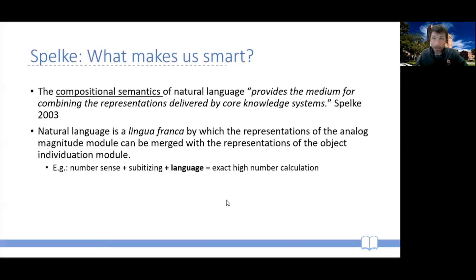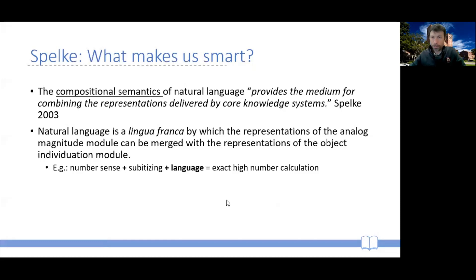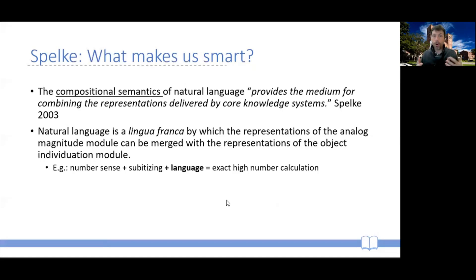This is what allows us, and not other species, to develop the number 745 — an exact high number — which is not delivered by either module by itself, but can be created by combining the representations of the number sense and the subitizing module. According to the theory, this is what makes us different from all other species. We start with the same modules, but language turns these modules into so much more. That is what makes us discontinuous with other species.